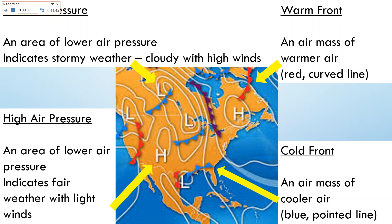Here we have a basic weather map. You'll see weather maps all the time on any news channel. If you see a red lumpy line, that's a warm air front — it's a warmer mass of air moving in the direction of the bumps. Warmer doesn't necessarily mean warm; if it's 29 degrees Fahrenheit here, your warmer air front could be 35 degrees Fahrenheit — that would be warmer.